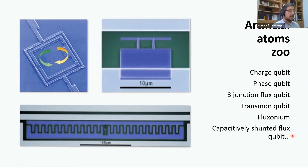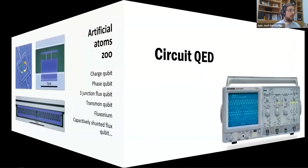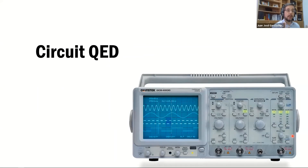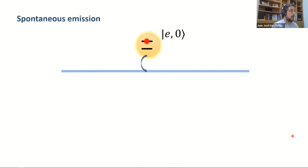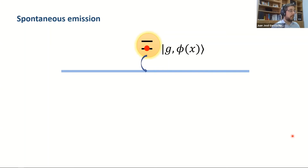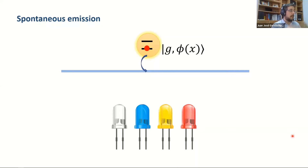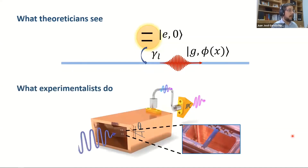Once we have microwave 'light' and qubits, we can do circuit QED — quantum electrodynamics with circuits — which is essentially quantum optics with electrical circuits. The simplest quantum phenomenon is single photon emission: an excited artificial atom relaxes, releasing a quantum of energy as a photon that propagates away. This is the fundamental process underlying phenomena like lasing, and in superconducting circuits it provides proof that we have truly quantized electromagnetic fields.